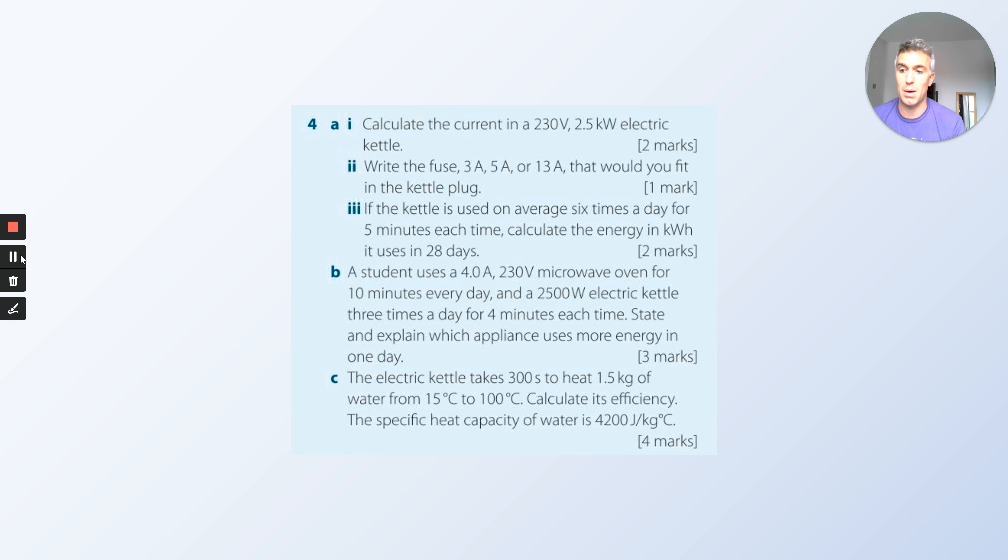A student uses a 4 amp, 230 volt microwave oven for 10 minutes every day. We've got I, we've got V, so you can work out the power. They use it for 10 minutes. They also use a 2500 watt electric kettle three times a day for four minutes. State and explain which appliance uses more energy in one day.